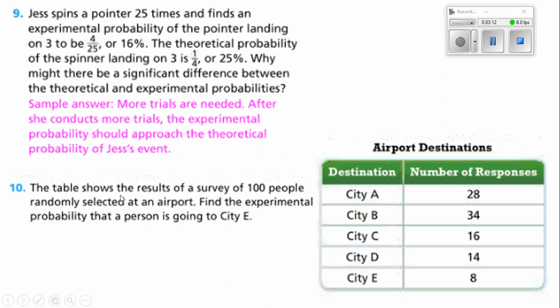The table shows the results of a survey of 100 people randomly selected at an airport. Find the experimental probability that a person is going to City E. In City E, it's only 8 times out of 100. So the experimental probability is going to be 8 over 100. 8 divided by 100 will give you 0.08. And if I move the decimal over twice, it becomes 8%.